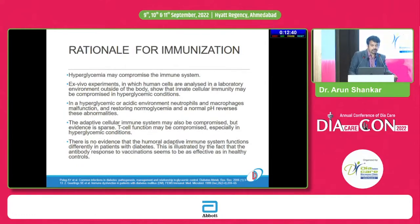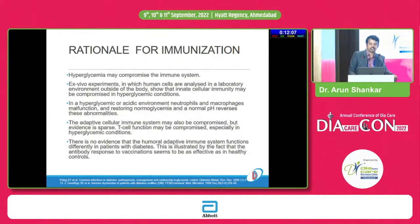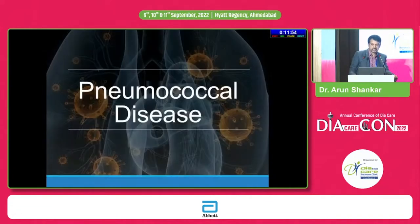Experiments have shown that in human cells outside the body, innate cellular immunity may be compromised in uncontrolled glycemic status. In a hyperglycemic or acidic environment, neutrophils and macrophages malfunction, and restoration of normal glycemia and normal pH reverses this. The adaptive cellular immune system may also be compromised — T cell function may be impaired, especially in hyperglycemic conditions. There is no evidence that the humoral adaptive immune system functions differently in diabetes patients.